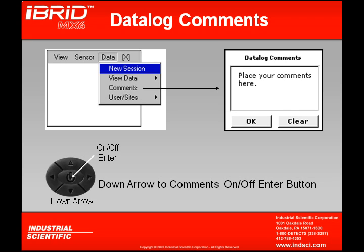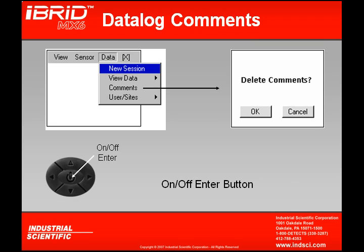If I scroll from View Data down to Comments, once I enter into Comments, this is where I can actually type in a comment with my instrument. I have to use the up and down arrows, and the left and right, to scroll through the alphabet to type in a comment. Once I type a comment in, when I download, that comment will be there to view. Along with entering comments, I can also delete comments as well. By clicking OK, I will confirm that I am going to delete that comment.